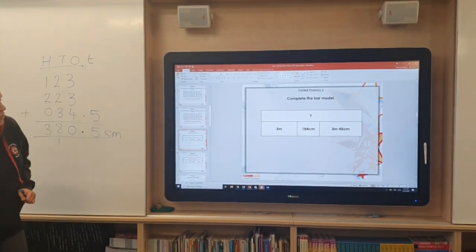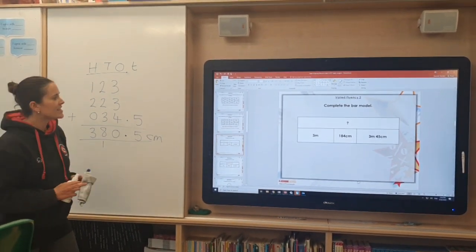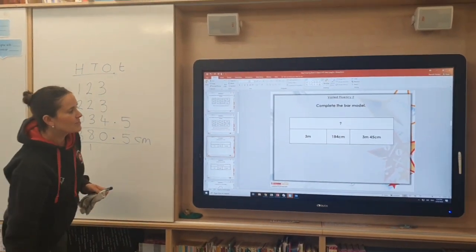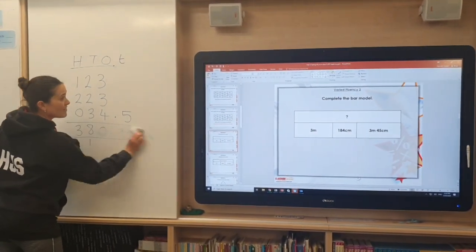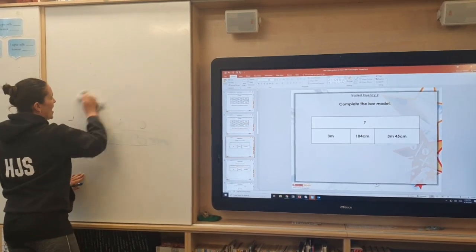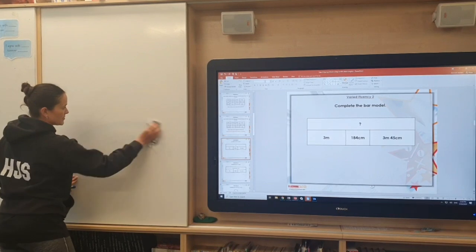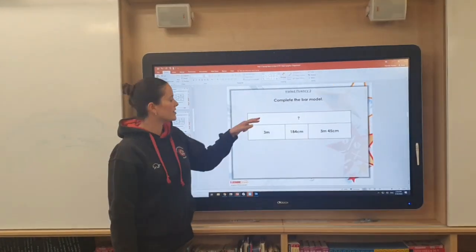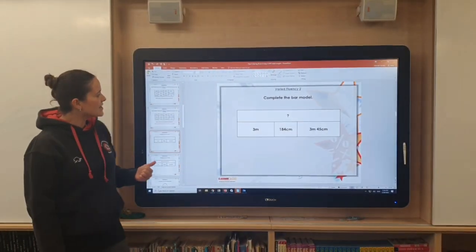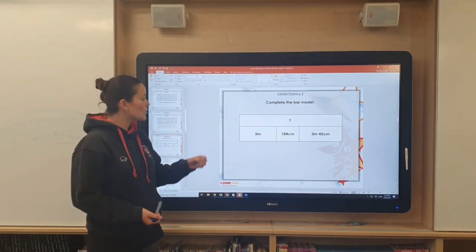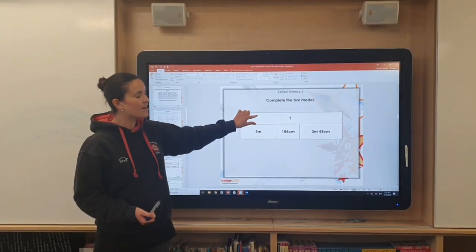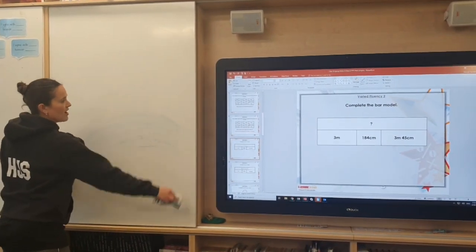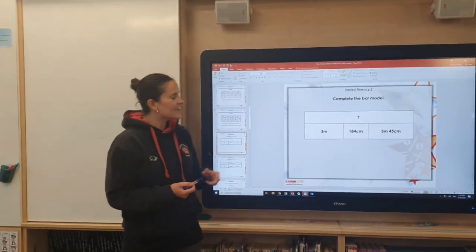The next sort of question you're going to be faced with on your worksheet is questions like this one which are for you to complete the bar model. Now you've seen bar models throughout year 2 and you've looked at them in year 3 as well. And just to remind you how they work. In this example the bar at the top is where we need to find the missing answer because we have the question mark there. And these three sections underneath all of those would add up together to make this number here at the top.